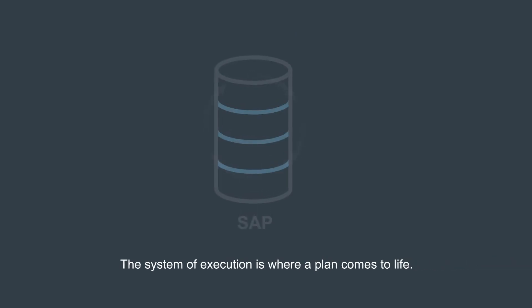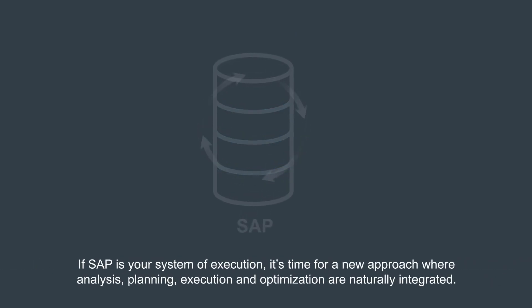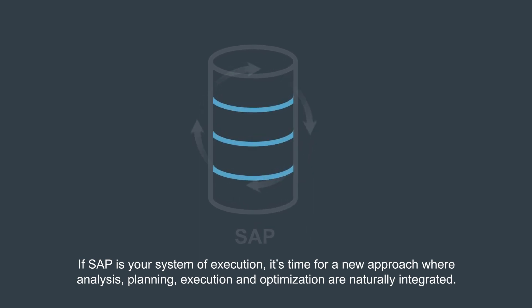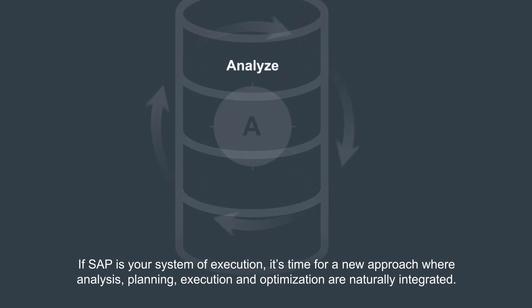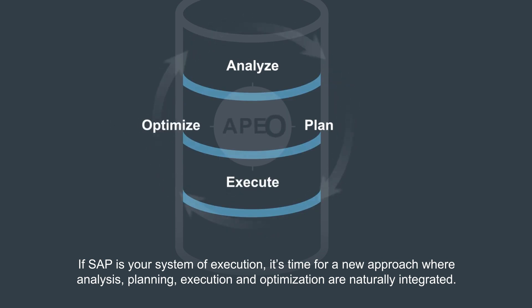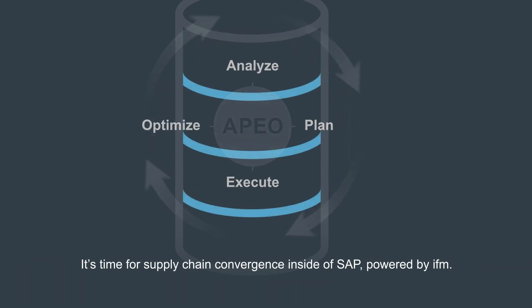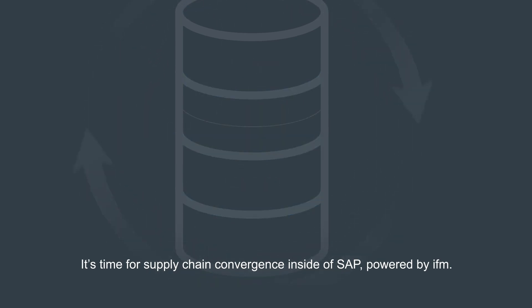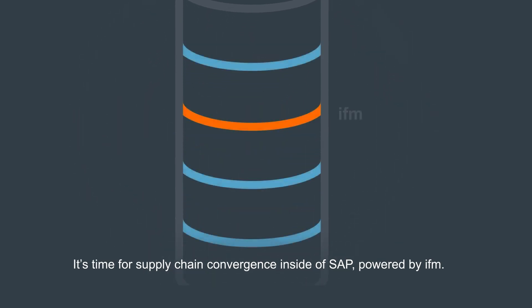The system of execution is where a plan comes to life. If SAP is your system of execution, it's time for a new approach where analysis, planning, execution, and optimization are naturally integrated. It's time for supply chain convergence inside of SAP, powered by IFM.